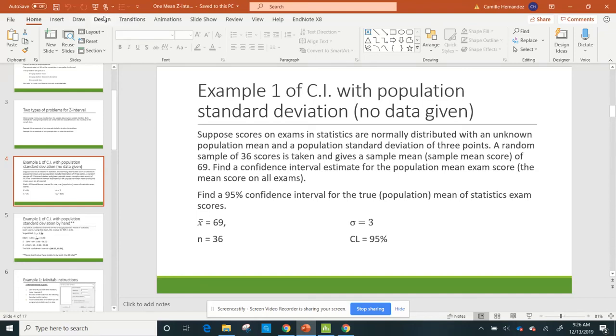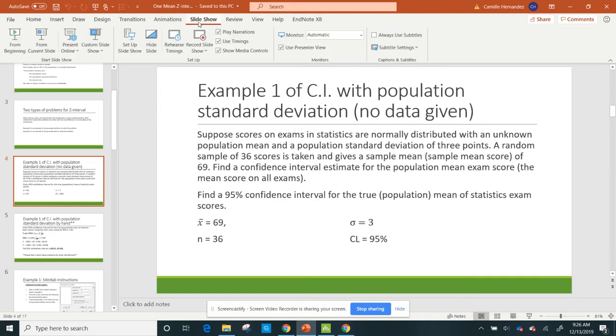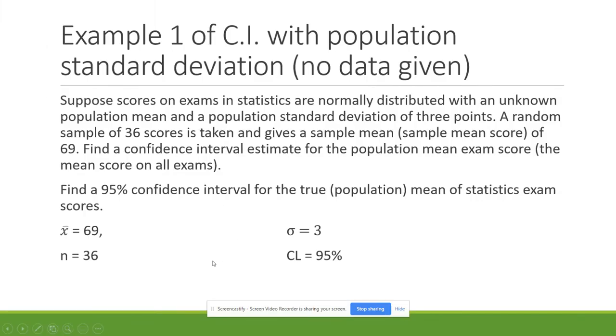Let's go ahead and do our first example for a z-interval. Suppose scores on an exam in statistics are normally distributed with an unknown population mean and a population standard deviation of 3 points.